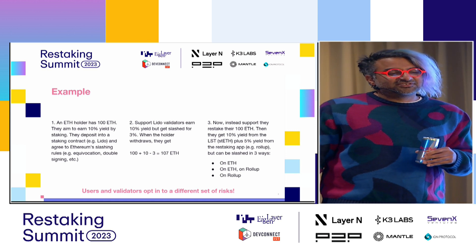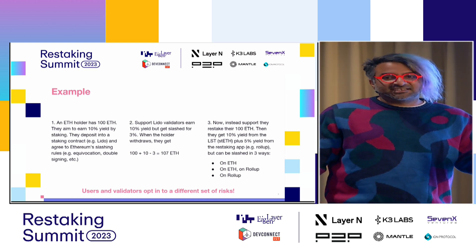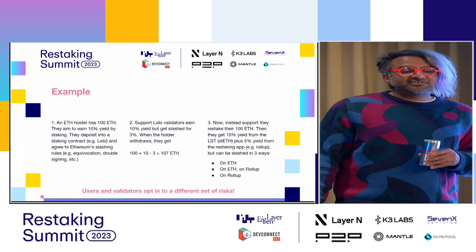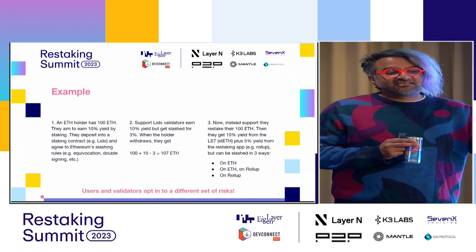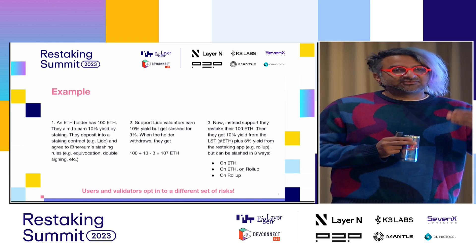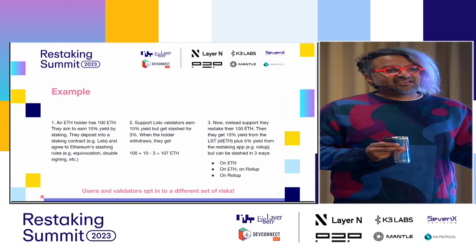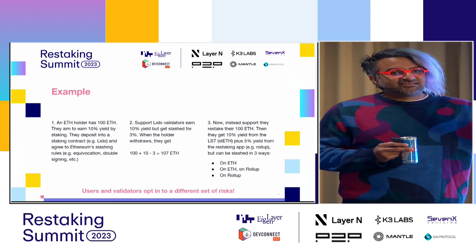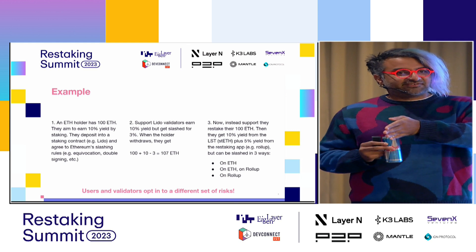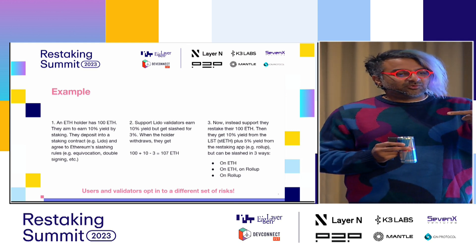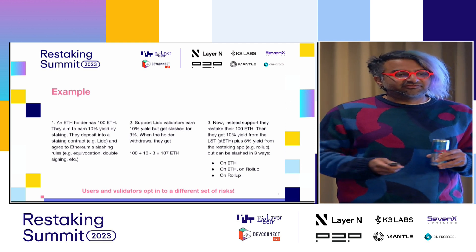Now suppose they restake their 100 ETH. They get 10% yield from staked ETH, and they also get 5% from the restaking app — maybe it's a decentralized sequencer. But the difference is now you have this ternary tree of different ways it can get slashed: slashed on ETH, slashed on ETH and the rollup, or slashed just on the restaking app. Users and validators are opting into different risks. That state space blowup changes the view of risk here.